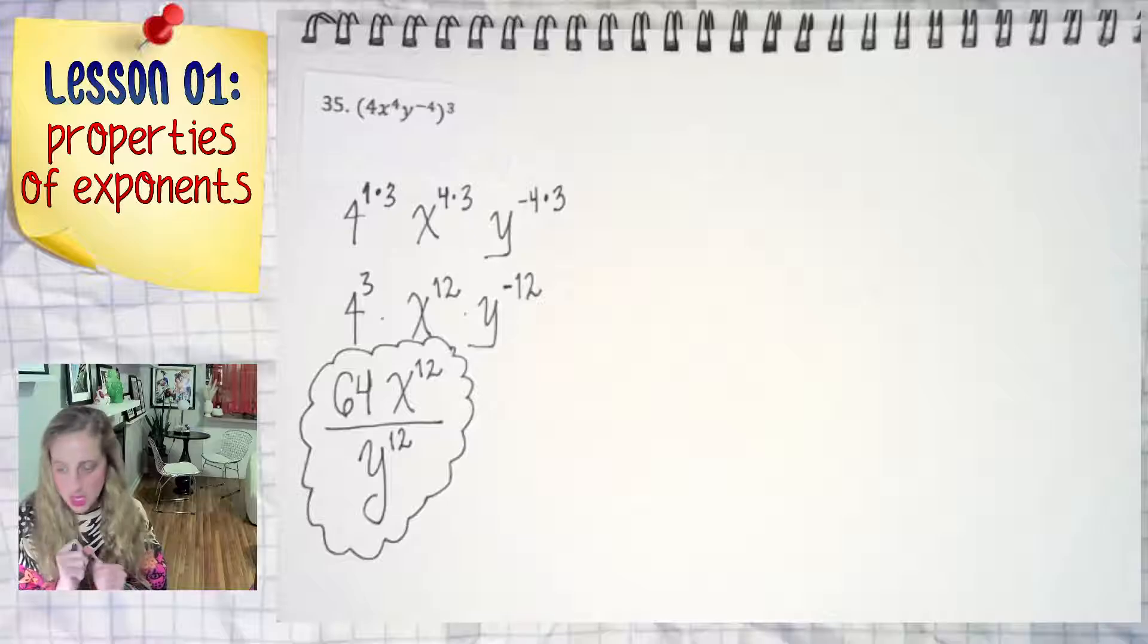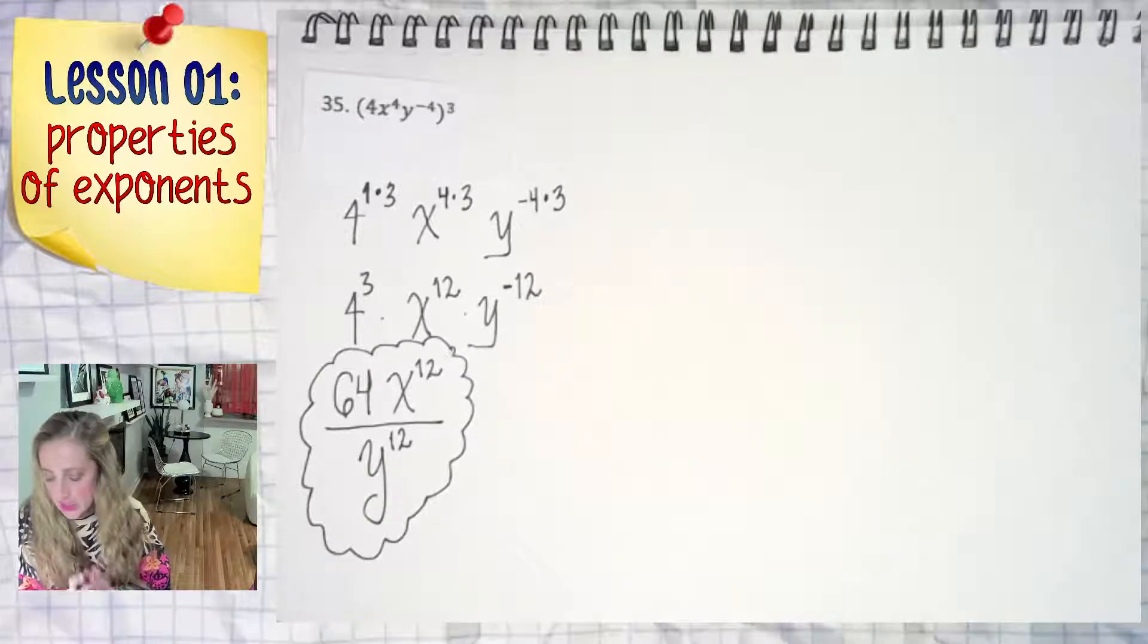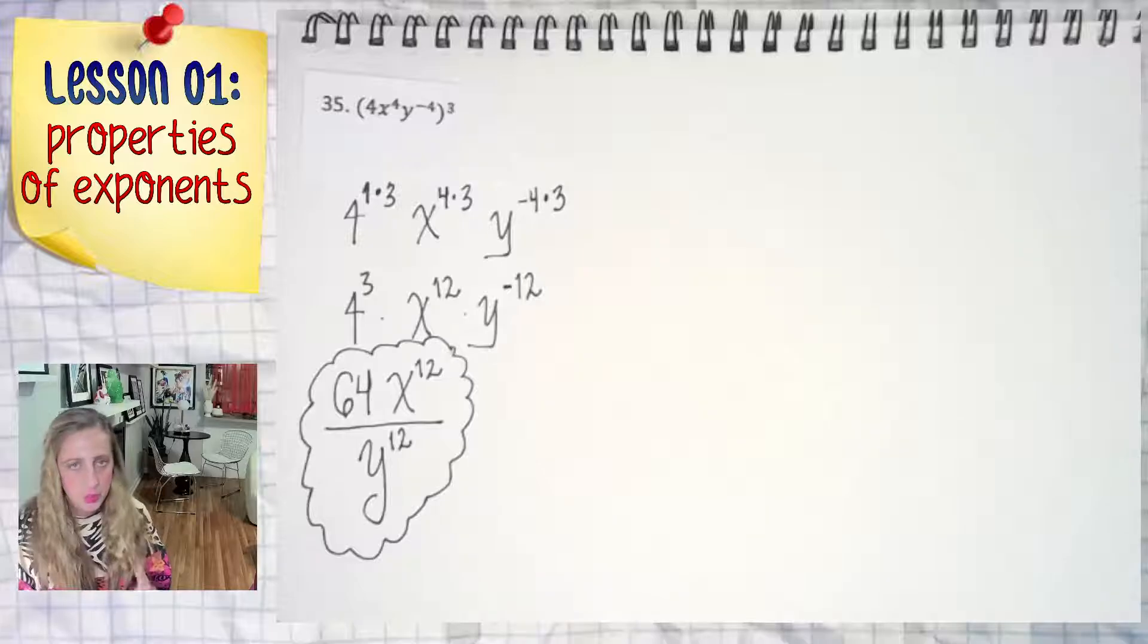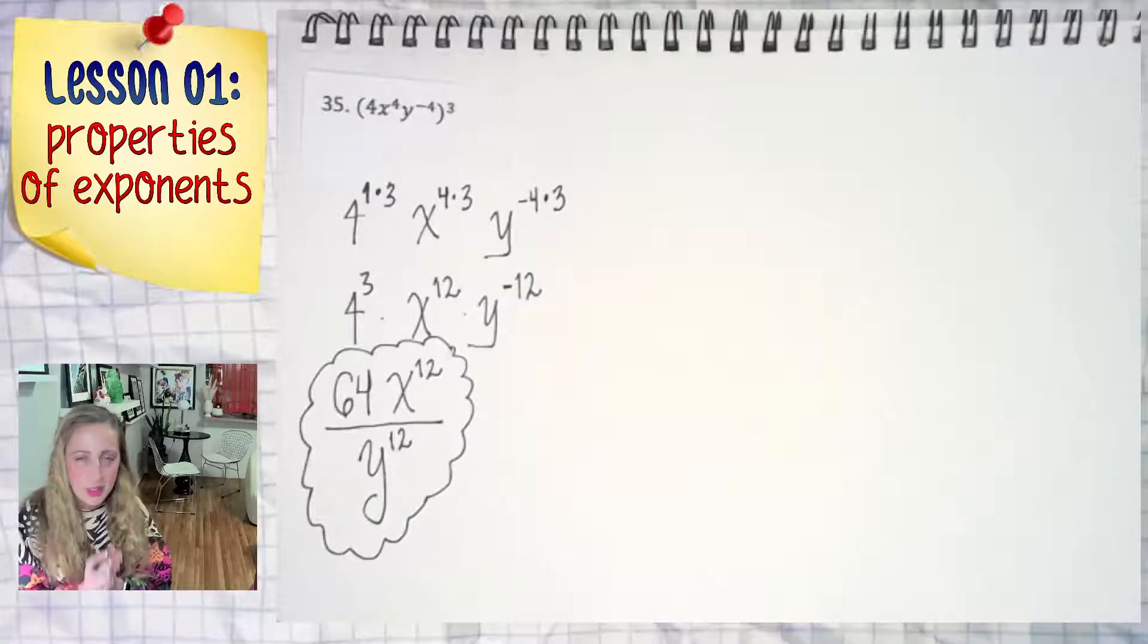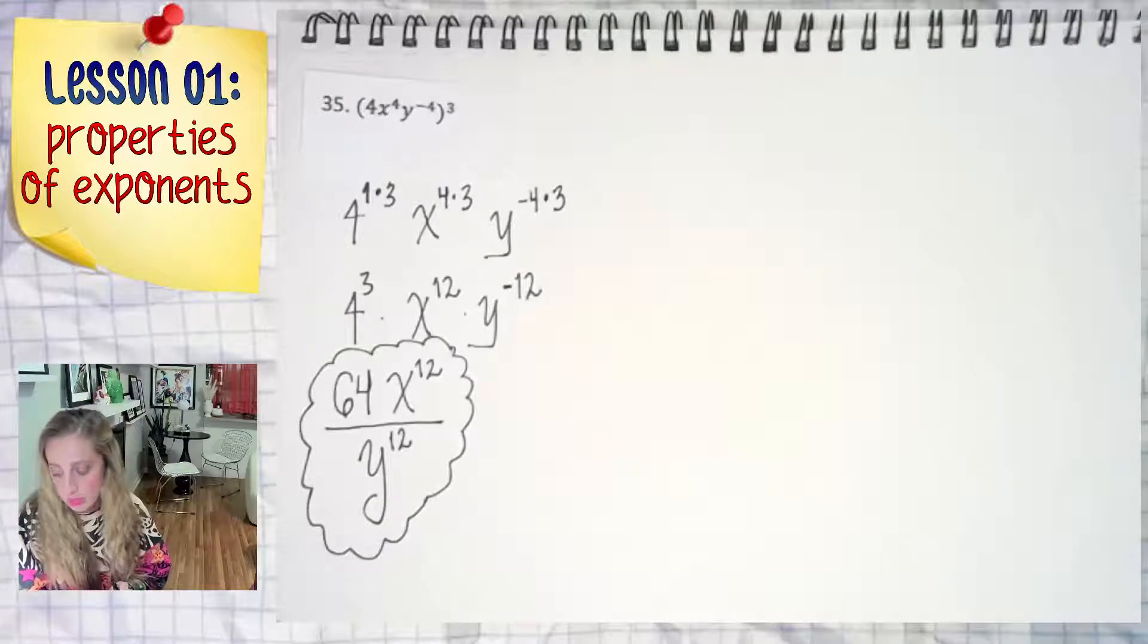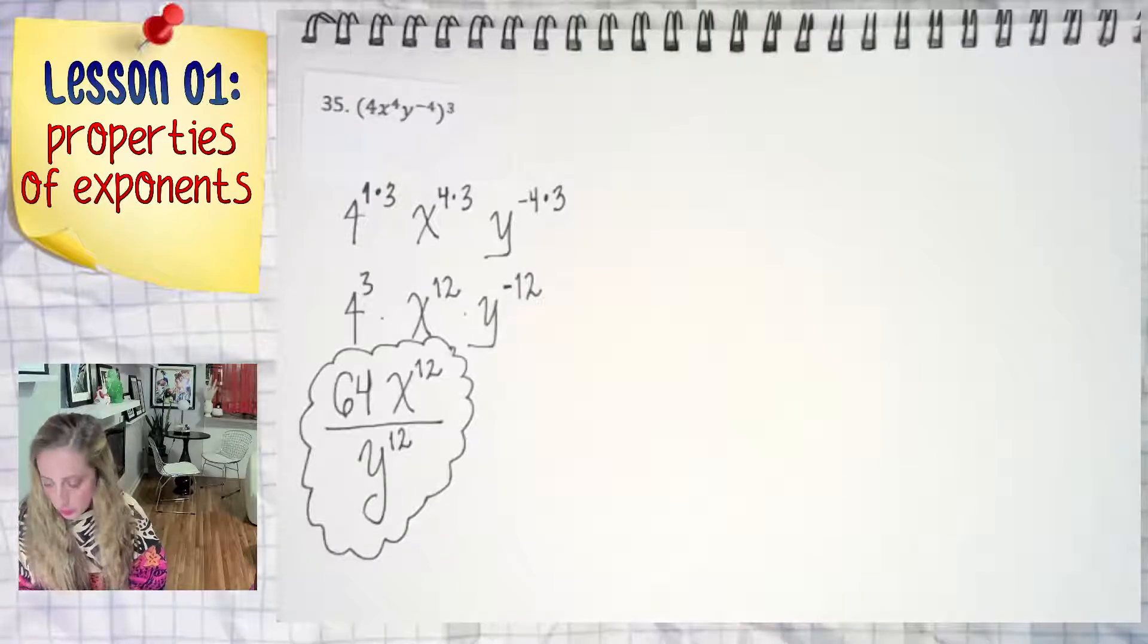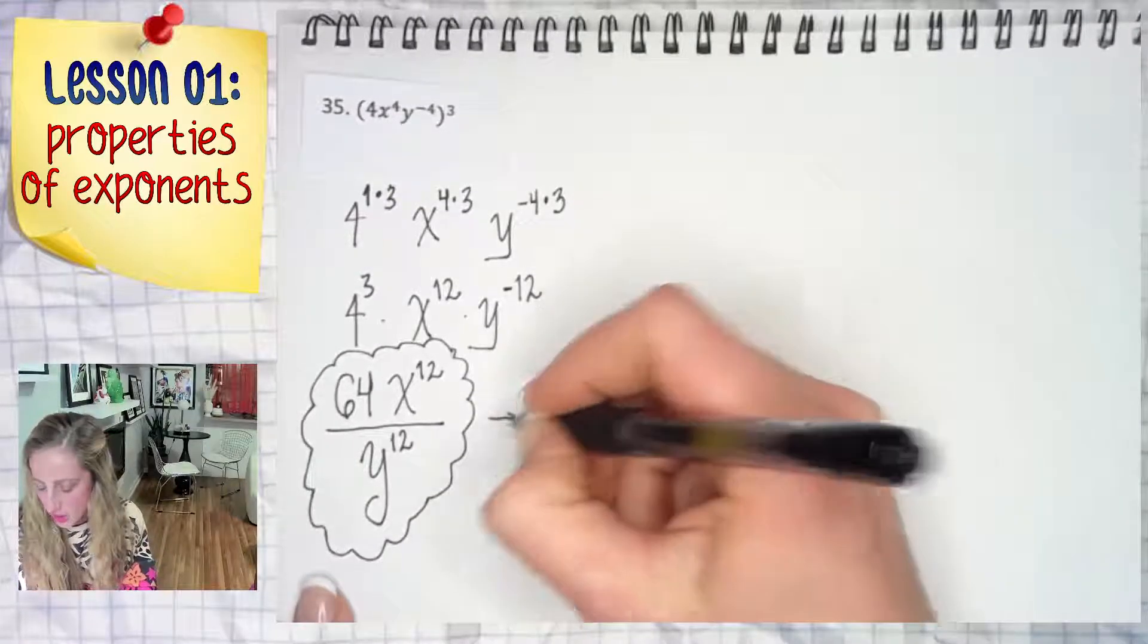If 64 were negative and for some reason you needed to move it, maybe it was being raised to a negative power, this negative in front of the 64 is not affected. So keep that in mind.